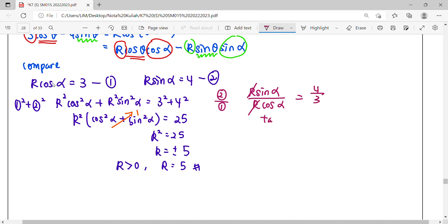So tanα equals 4/3. The basic angle α will be tan⁻¹(4/3).